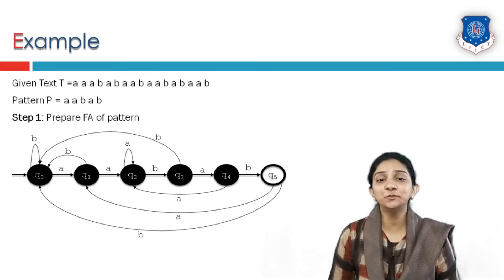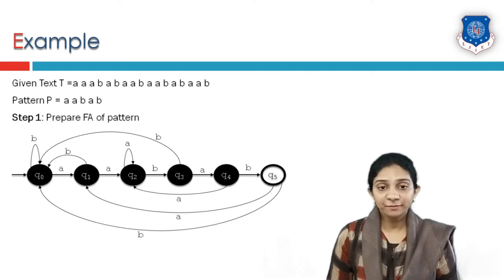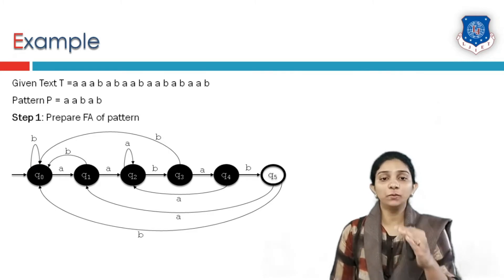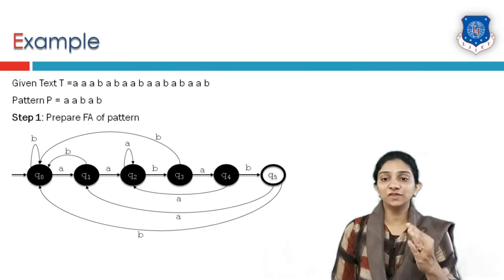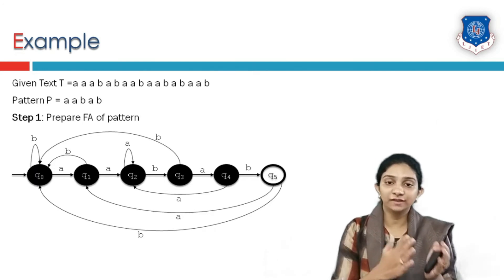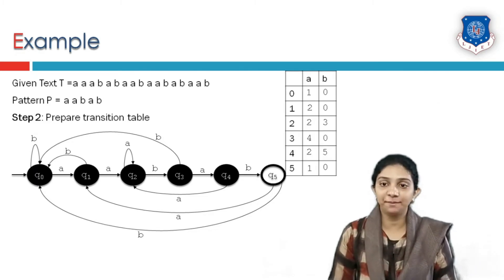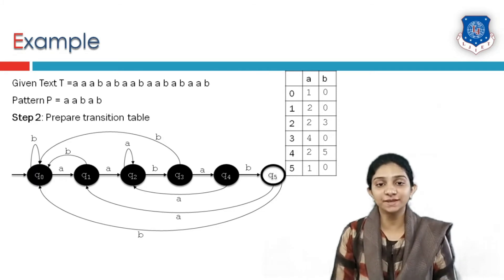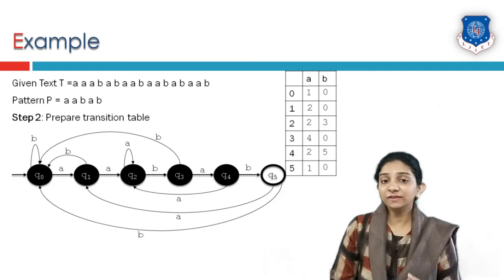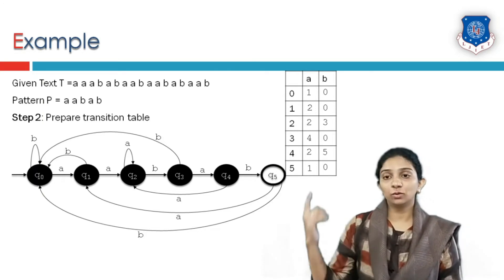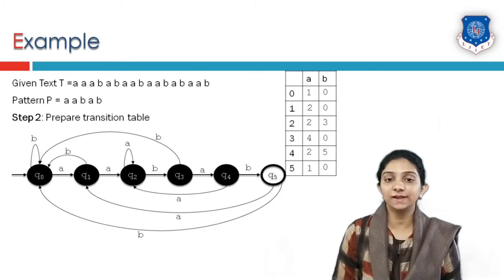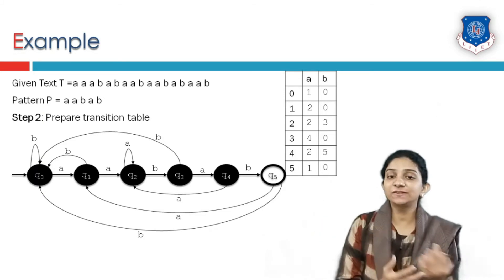The next step is to prepare the state transition table delta. The number of symbols gives the number of columns, and the number of states gives the number of rows — so rows 0 to 5 and columns A and B. For initial state q0: input A leads to state 1 (row 0, col A = 1) and input B leads to state 0 (row 0, col B = 0). For q1: input A leads to state 2 (row 1, col A = 2) and input B leads to state 0 (row 1, col B = 0).